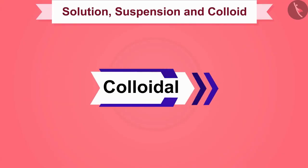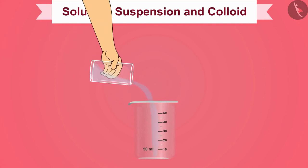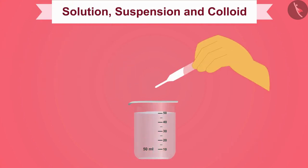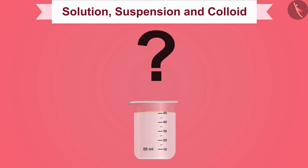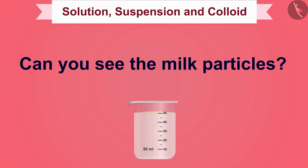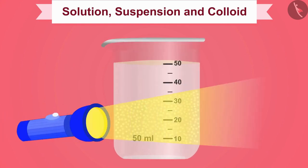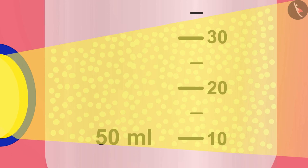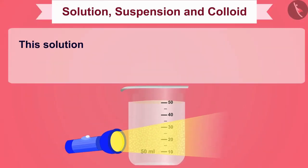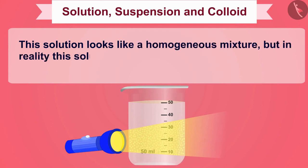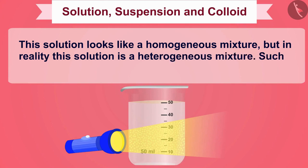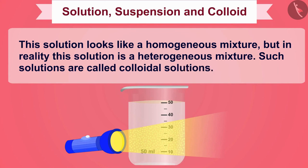Let us now learn about the last type — colloidal solution. Take water in a 50 ml beaker and add a few drops of milk to it. Milk particles spread evenly in water, and you cannot see the milk particles. But if we pass a light beam through this solution with a torch, we find that the milk particles easily scatter the beam of light. Therefore, this solution looks like a homogeneous mixture, but in reality it is a heterogeneous mixture. Such solutions are called colloidal solutions.